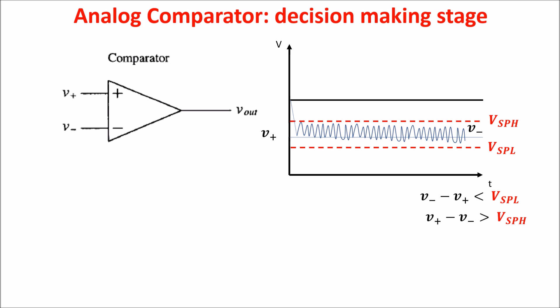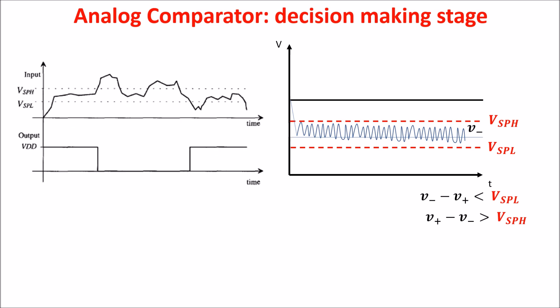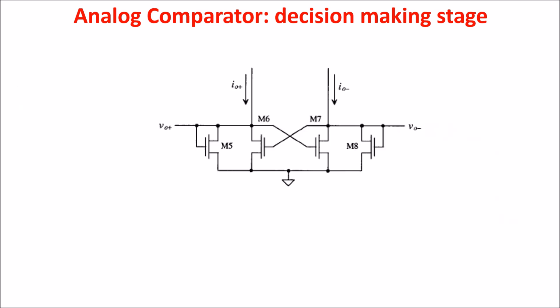The working with hysteresis is this, where you can see we get a clear output. Of course, we have to set the hysteresis properly, keeping in mind the noise. Now, let's begin by assuming that IO plus is much larger than IO minus, so that M5 and M7 are on and M6 and M8 are off. We will also assume that beta 5 equals beta 8 equals beta A and beta 6 equals beta 7 equals beta B.